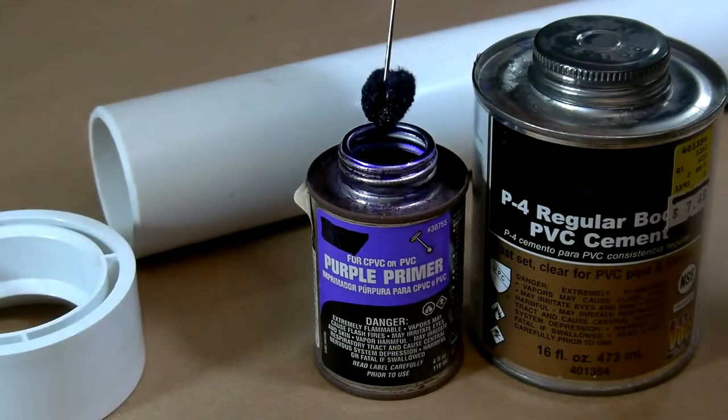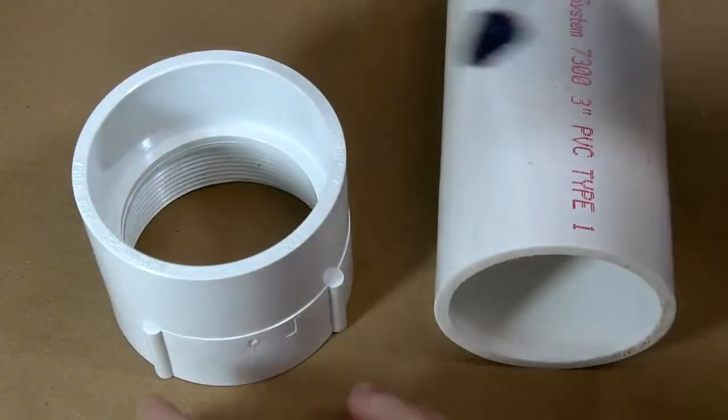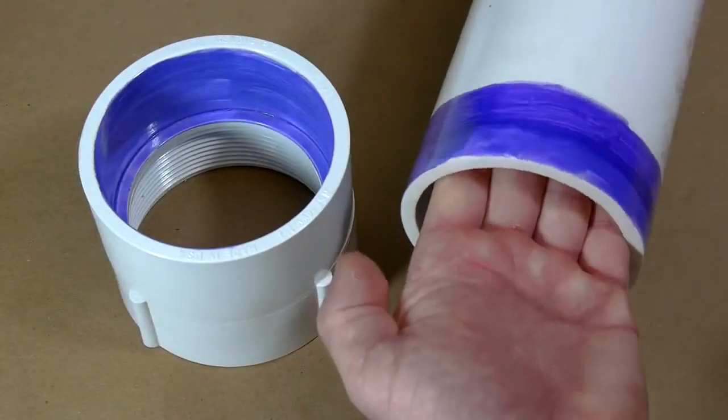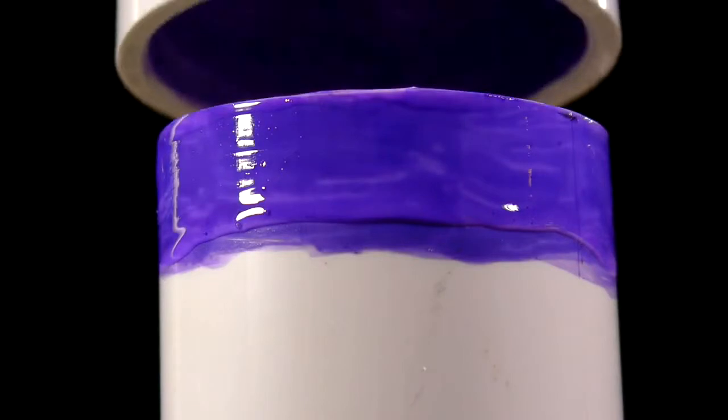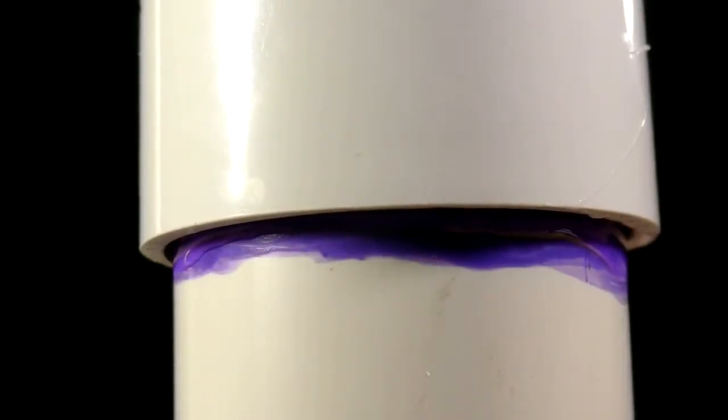First using PVC primer and a healthy coat of PVC cement on both the pipe and fitting, a threaded female adapter is pressed onto one end of the 3 inch pipe. Twisting the fitting a quarter turn quickly before the glue dries will ensure that there are no leaks later on.